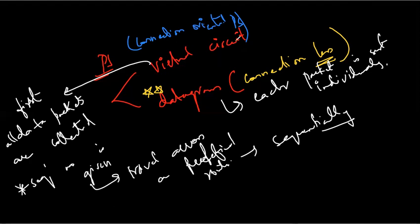In the virtual circuit approach, first all the packets are collected, then the sequence number is given, and then they travel in sequence — packet number one goes first, then packet number two, and so on. Each packet does not need its own address or the total number of packets. Each of them will be seen in detail along with how they travel on a specified route to the given destination.